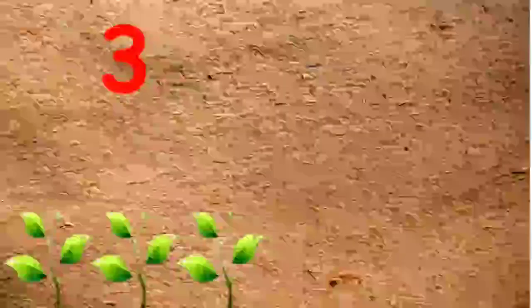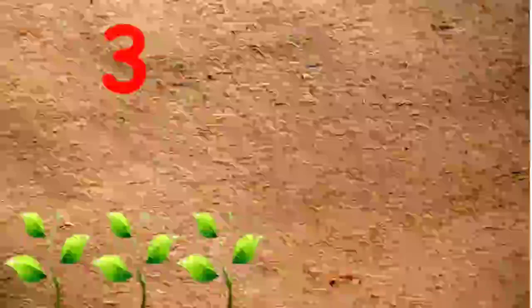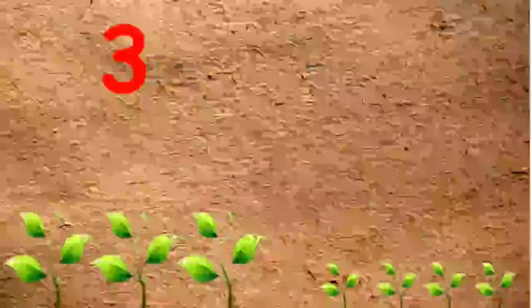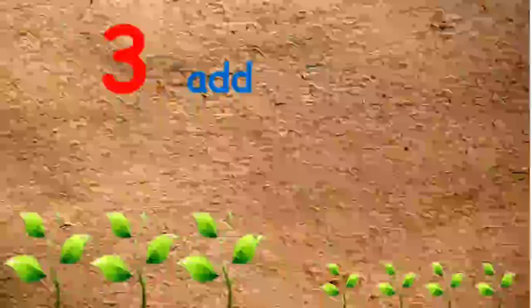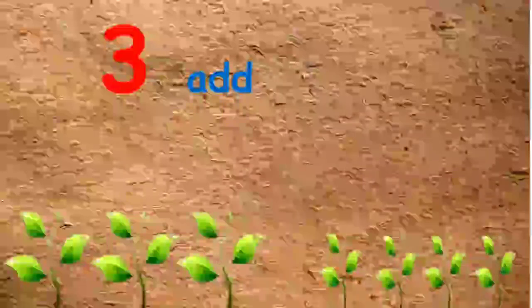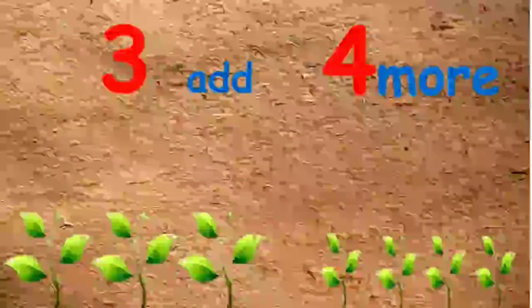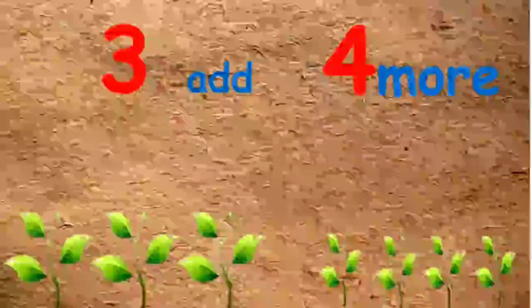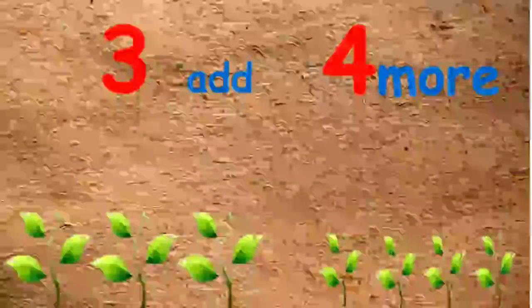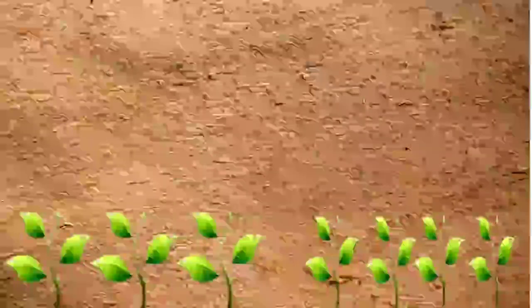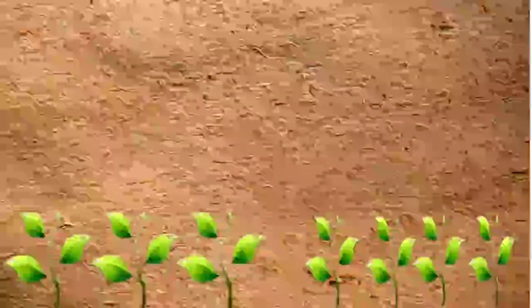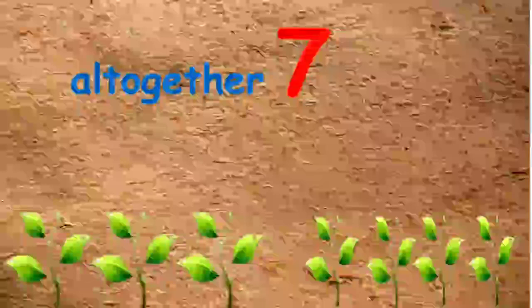Let's see another example. How many saplings can you see here? Count and tell me — number three. Now let's see what happens. There are a few more saplings — how many saplings can you see here which are growing? One, two, three and four. So three and now we will add four more. So altogether how many saplings will be there? Let's count: one, two, three, four, five, six and seven. So altogether there are seven saplings.